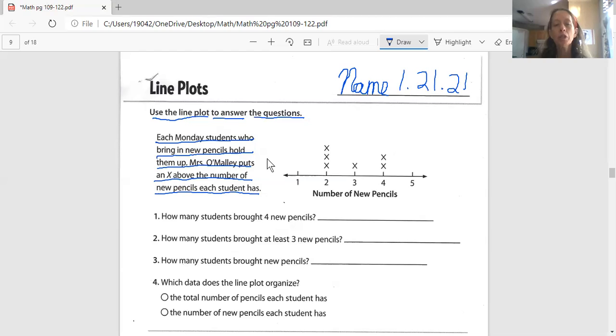If we look at question number one, it says, how many students brought in four new pencils? Well, that's pretty easy. I just go to the four. There it is. And I count the X's. One, two. So how many students brought four new pencils? Two did.